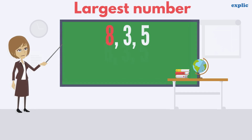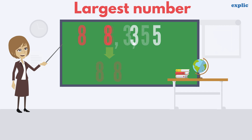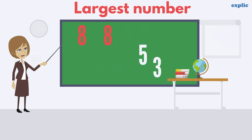To form the largest four-digit number, just repeat the largest digit twice. Since 8 is the largest digit, use 8 two times. Arrange digits in descending order to get the largest four-digit number. 8853 is the largest four-digit number using 8, 3 and 5.